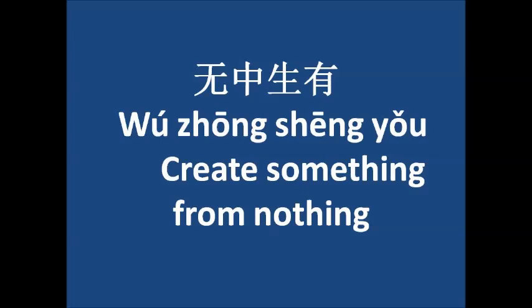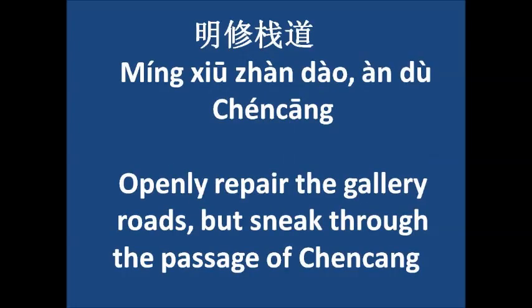Moving to the second strategy: openly repair the gallery roads but sneak through the passage of Chang Chang. Deceive the enemy with an obvious approach that will take a very long time, while surprising him by taking a shortcut and sneaking up to him. As the enemy concentrates on the decoy, he'll miss your sneaking up to him. This tactic is also an extension of making a sound in the east and striking in the west, but the difference is that striking the west conceals the attack point, while secretly crossing Chang Chang conceals the attack route.